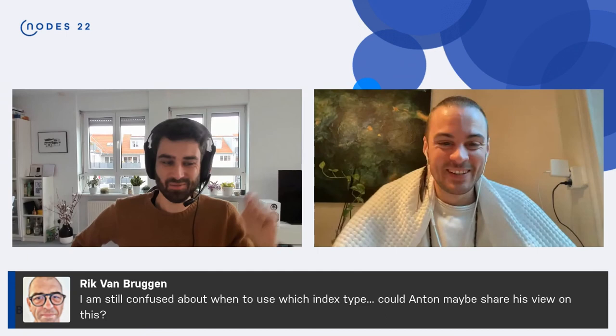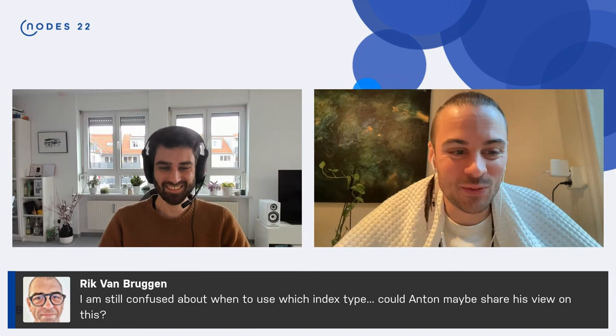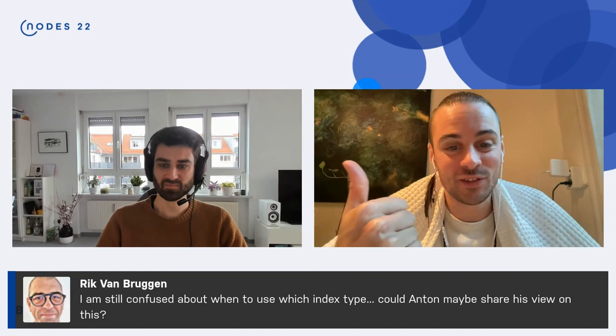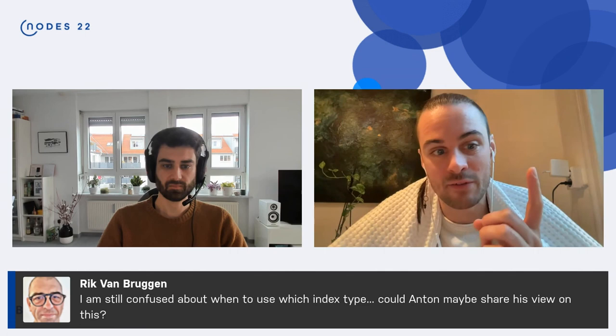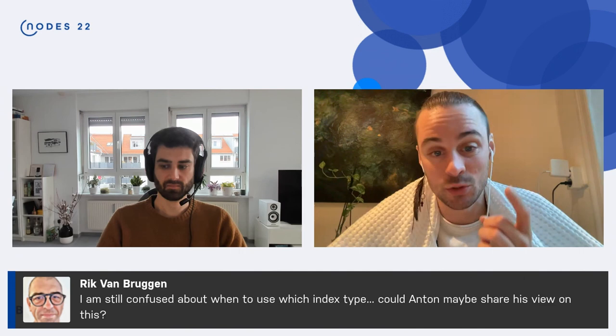Okay. And then a question from Rick. I'm still confused about when to use which index type. Could Anton maybe share his views on this? Do you have a 30 second summary, which index goes where? You always want to use the range index unless you have contains or ends with queries. In that case, use text, or you have a distance or bounding box queries. In that case, use point. Or if you have very large strings, larger than 8K, use text. It's a simple answer.